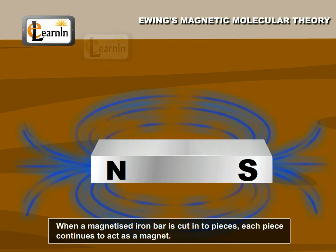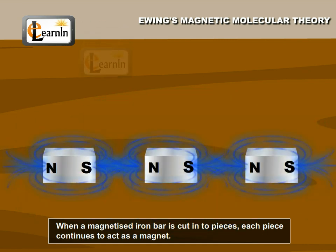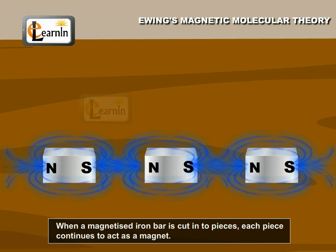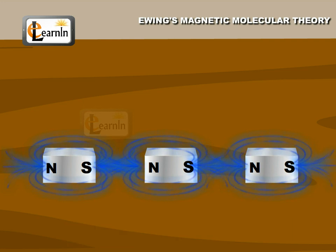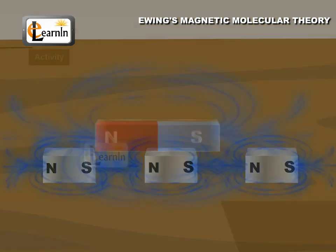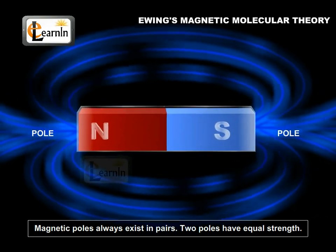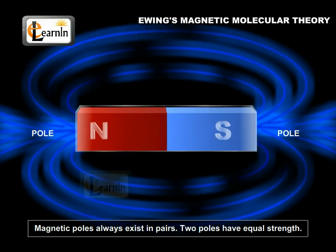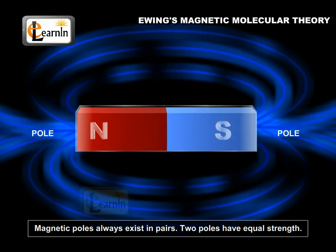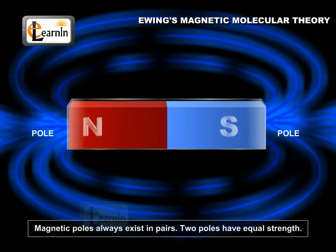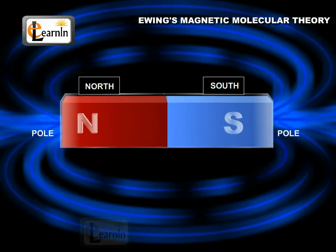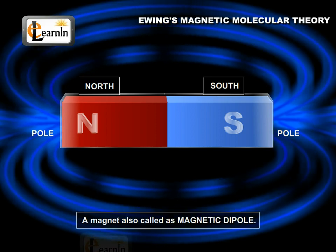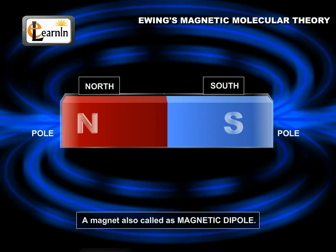When the magnetized iron bar is cut into a number of smaller and smaller pieces, each piece continues to act as a magnet. By extension of the logic, this means that the smallest possible piece — a molecule — is also a magnet. Magnetic poles always exist in pairs, and two poles have equal strength. Since any magnet consists of two N and S poles, a magnet is also called a magnetic dipole.